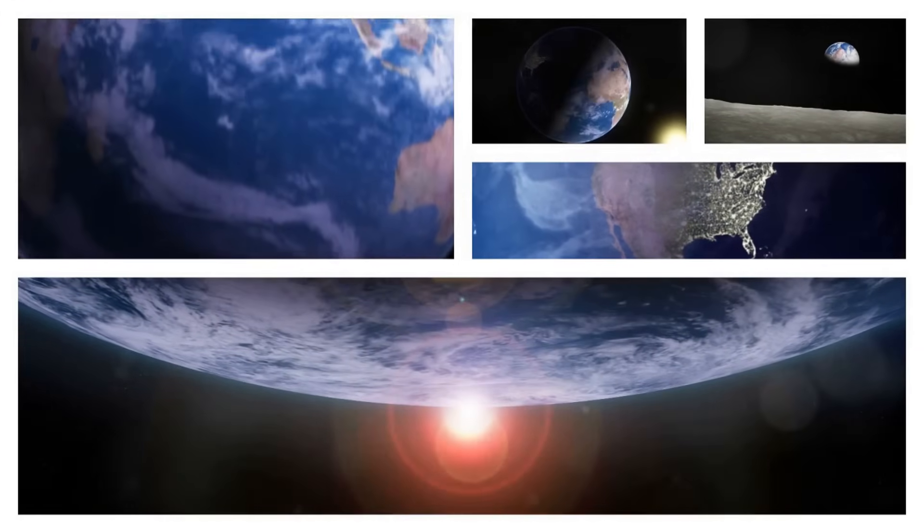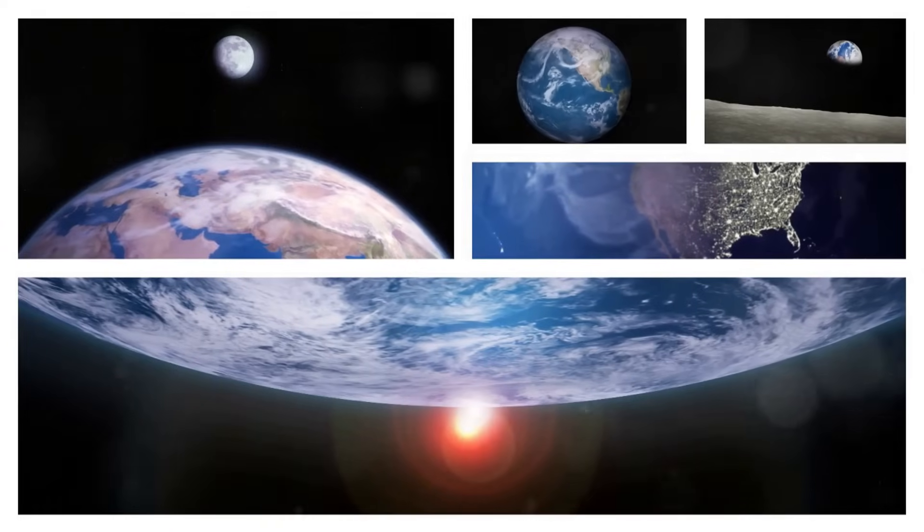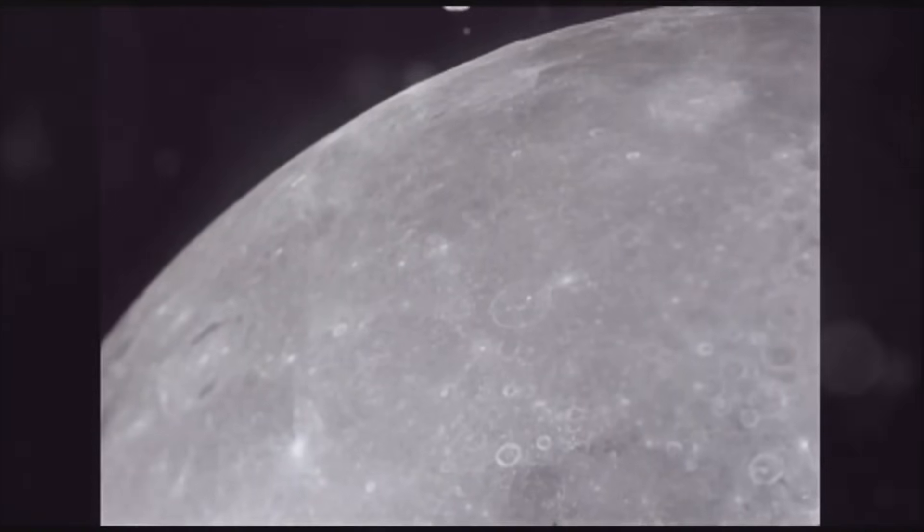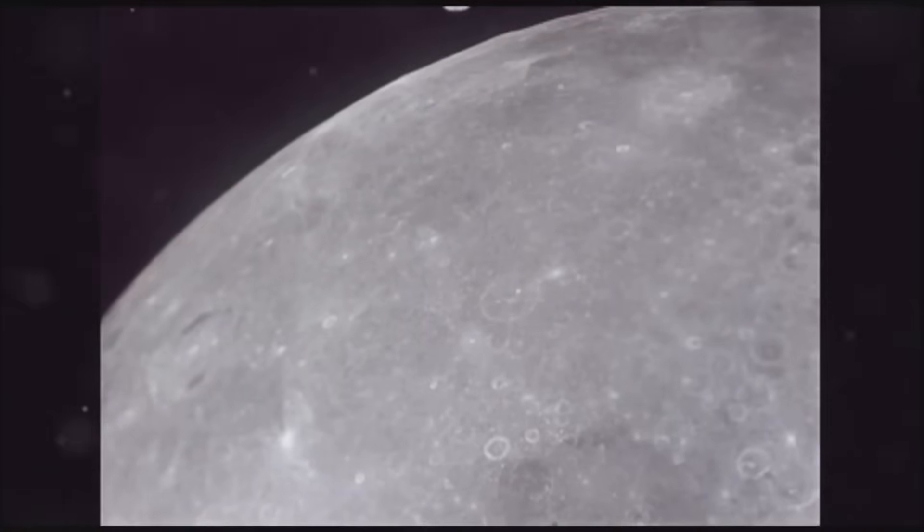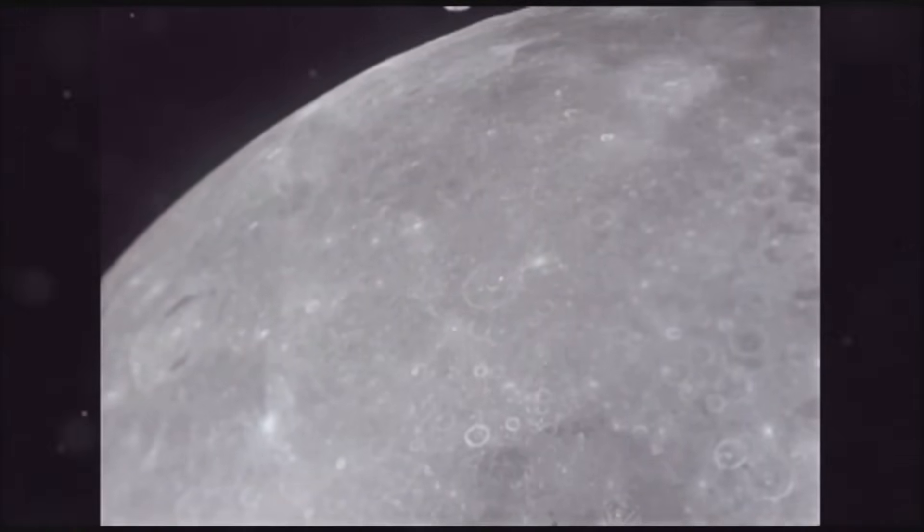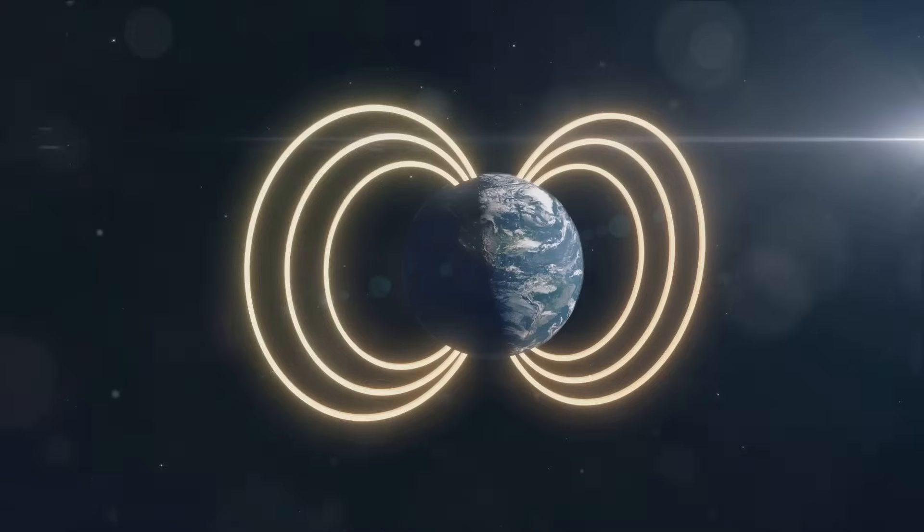Every organism, no matter how small or seemingly insignificant, plays a role in maintaining the delicate balance of life on Earth. Let's not forget our companion in space, the Moon. It's more than just a pretty sight in the night sky. It stabilizes Earth's tilt, giving us predictable seasons, and its gravitational pull drives the tides on our planet.